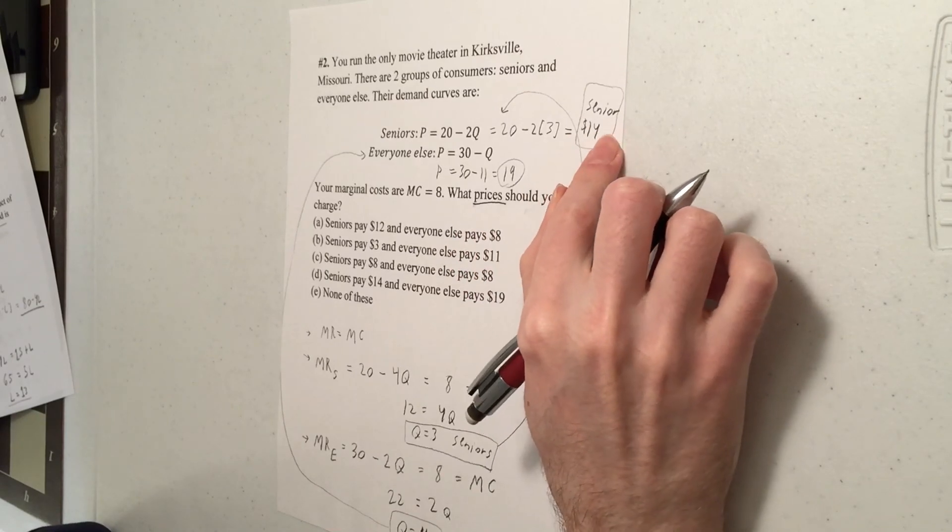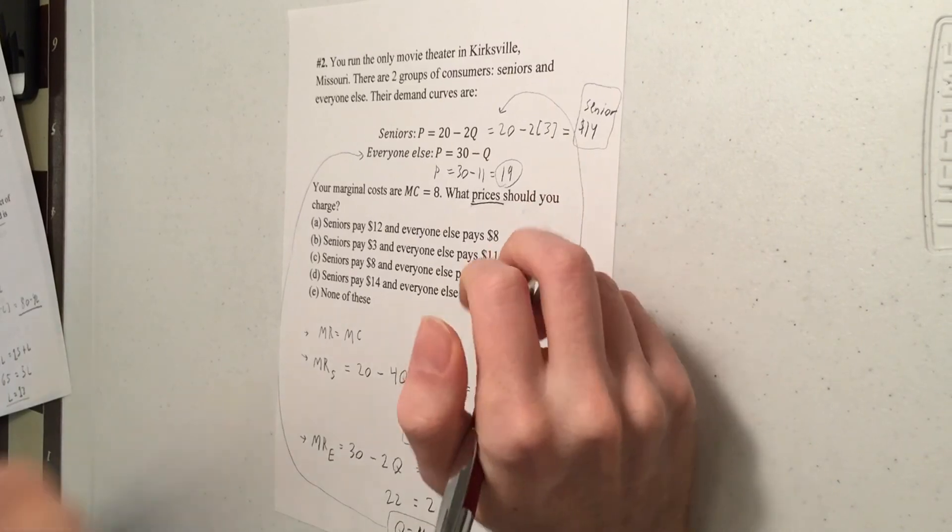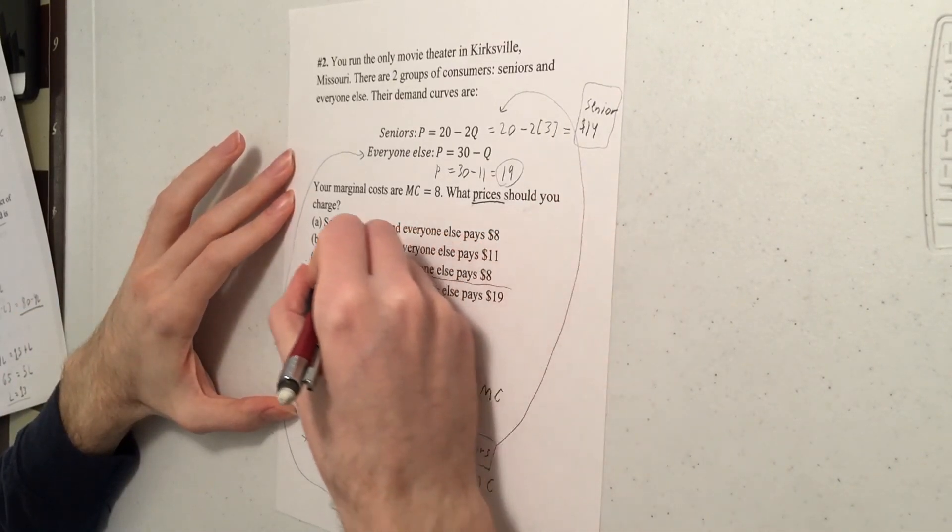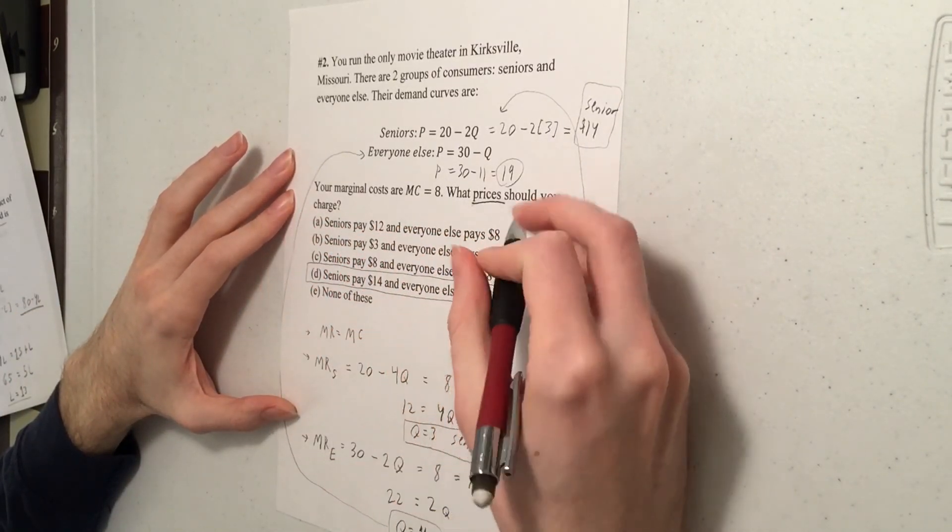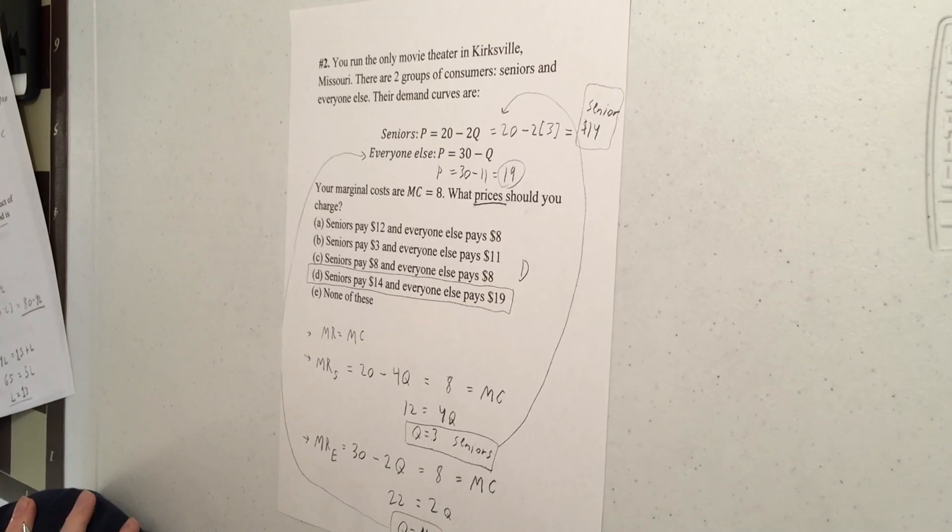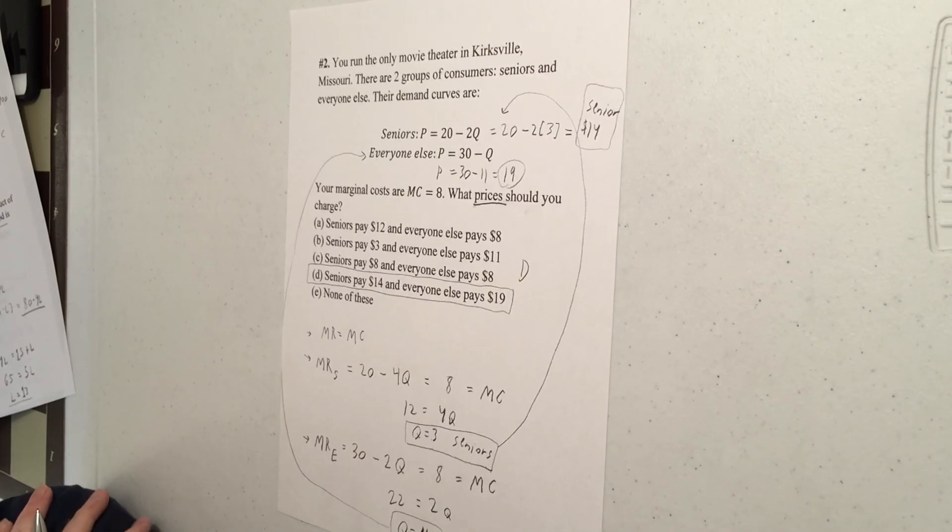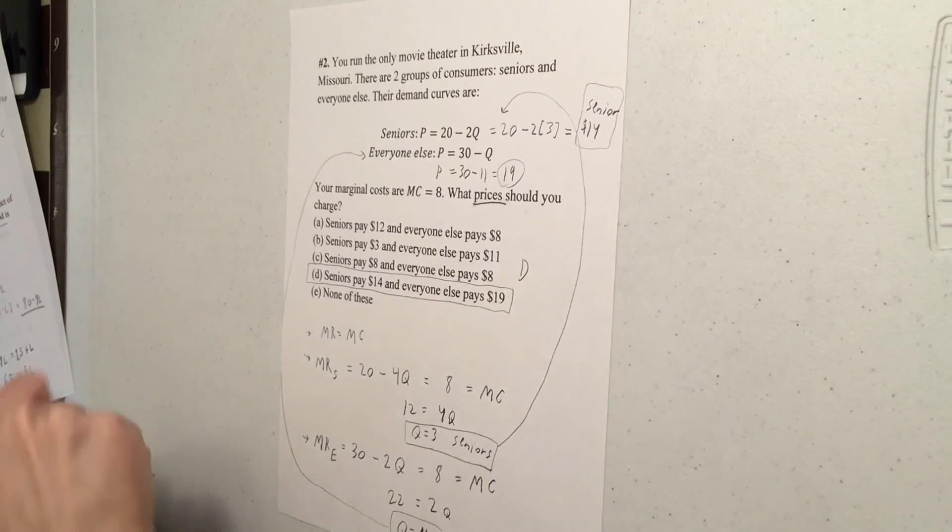So seniors should pay $14. Everyone else should pay $19. That corresponds to choice D. So as you can see, once again, in the harder section, the problems require substantially more work than in the easier section. All right, that wraps up our practice session, and this will be the very last video of this course. Hope you guys stay safe out there and have the best of luck on the final exam. Goodbye.